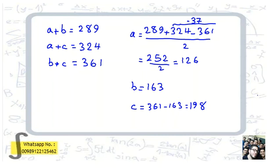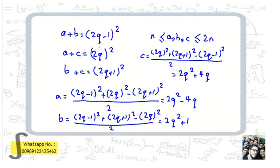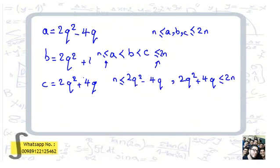Now let's generalize. Set a+b = (2q−1)², a+c = (2q)², b+c = (2q+1)², mirroring the previous example. Then a = 2q²−4q, b = q²+1, and c = 2q²+4q. We need a, b, and c to all lie between n and 2n, and q must be greater than 1 since both numbers being summed exceed 100.